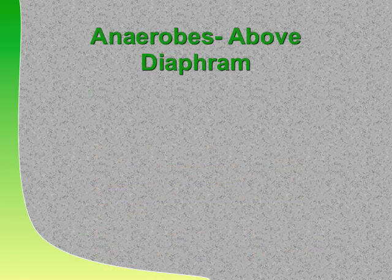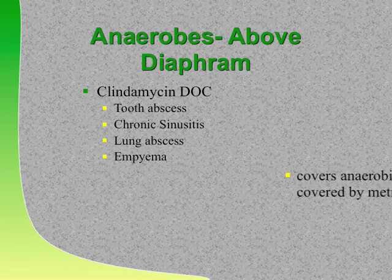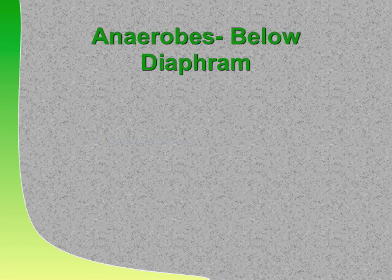For anaerobic lung abscess, empyema, sinus infection due to anaerobes, and tooth abscess—all above the diaphragm—what's your anaerobic drug of choice? Clindamycin. Besides killing anaerobes above the diaphragm like anaerobic strep, clindamycin also kills Staph aureus, which Flagyl does not. What's the drug below the diaphragm? Flagyl—metronidazole.